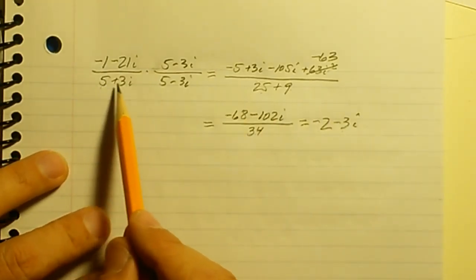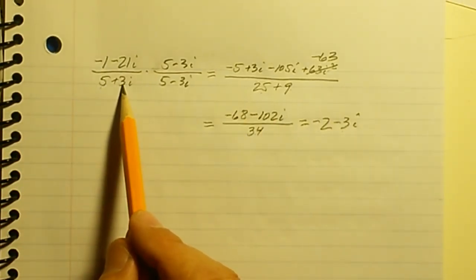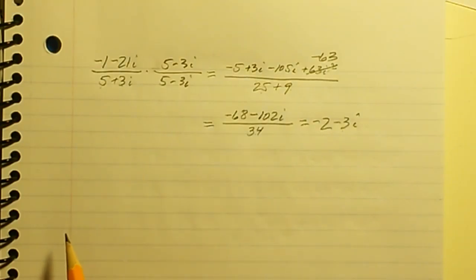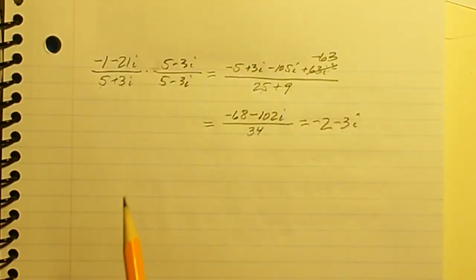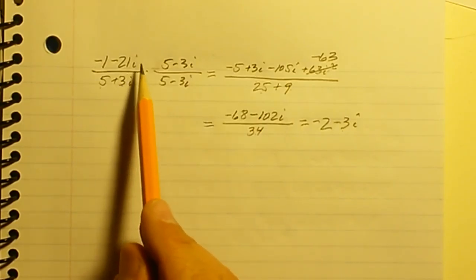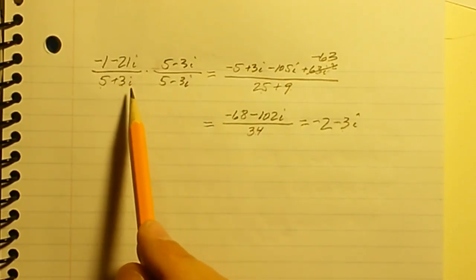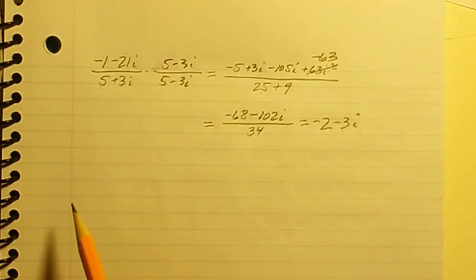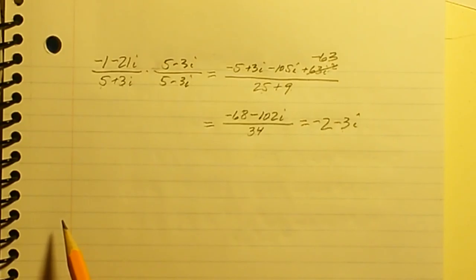So the answer is negative 2 minus 3i. If you multiply negative 2 minus 3i times 5 plus 3i you will get negative 1 minus 21i — I'll leave that for you to verify. That's how you divide complex numbers: by multiplying the fraction by the complex conjugate of the denominator. I hope this helps and I'll see you in the next video!